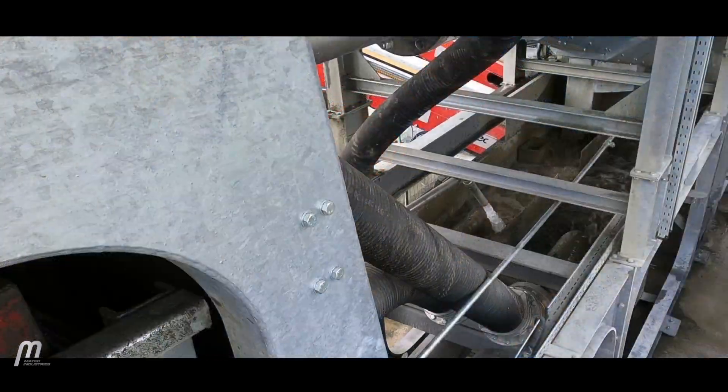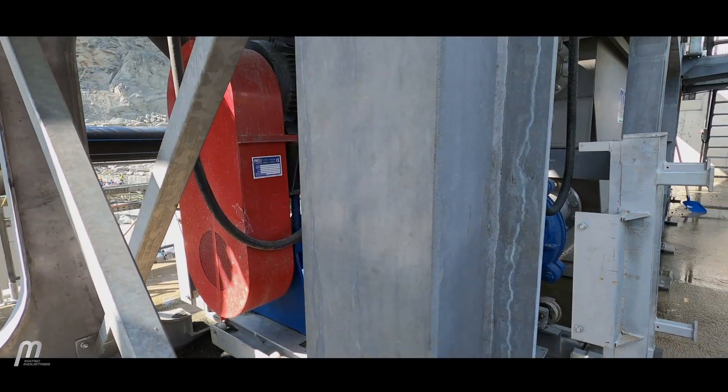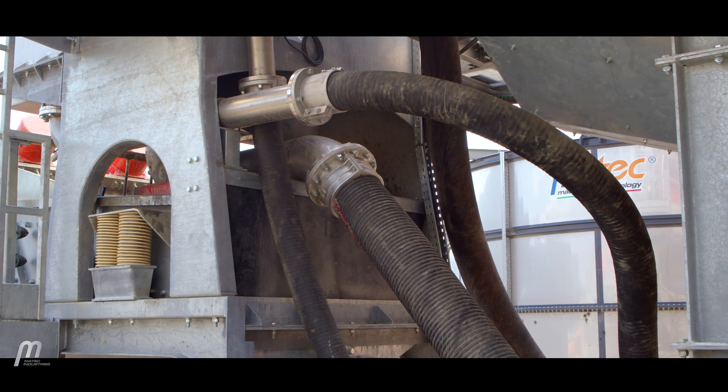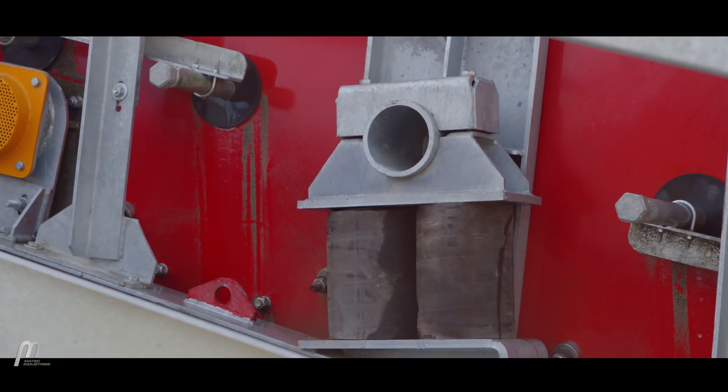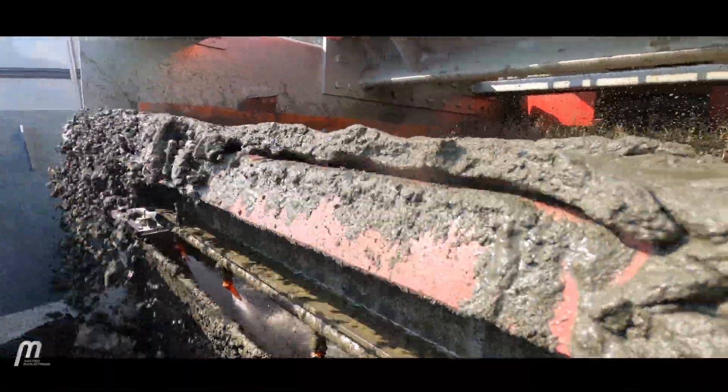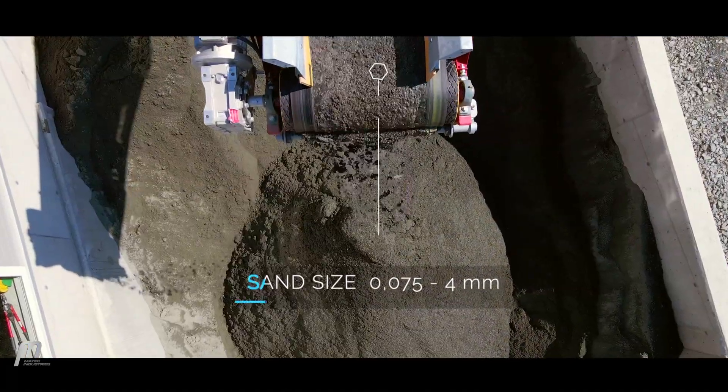Sand slurry is collected in a stainless steel sump, then sent to the Sandtech hydrocyclones via rubber lined centrifugal pumps. The cyclones efficiently remove excess fines, leaving in-spec washed sand, which is then dewatered on the integrated dewatering screen.